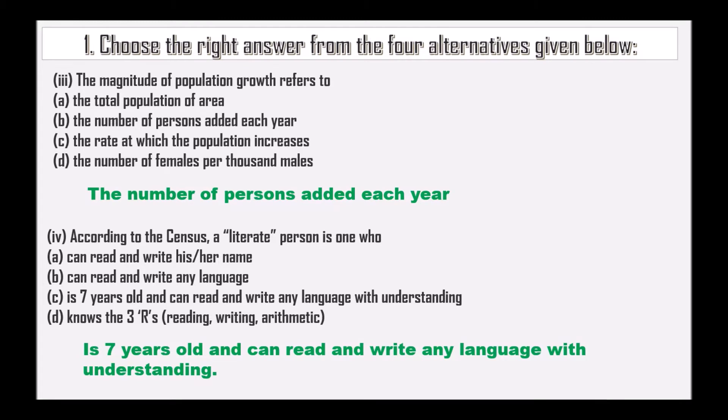According to the census, a literate person is one who is 7 years old and can read and write any language with understanding.